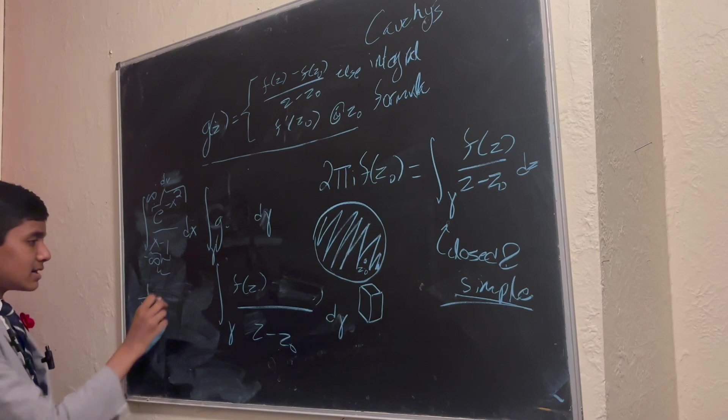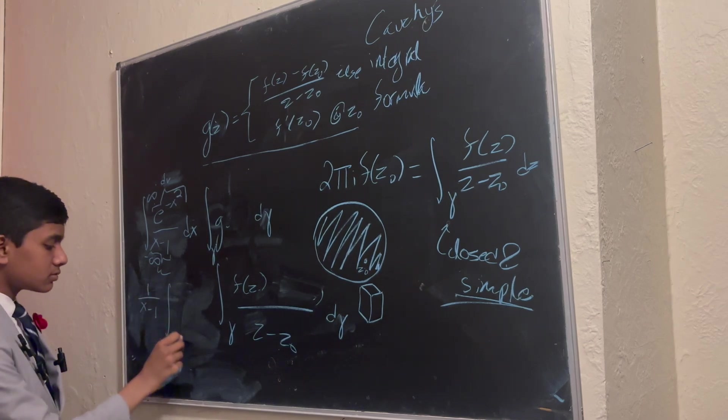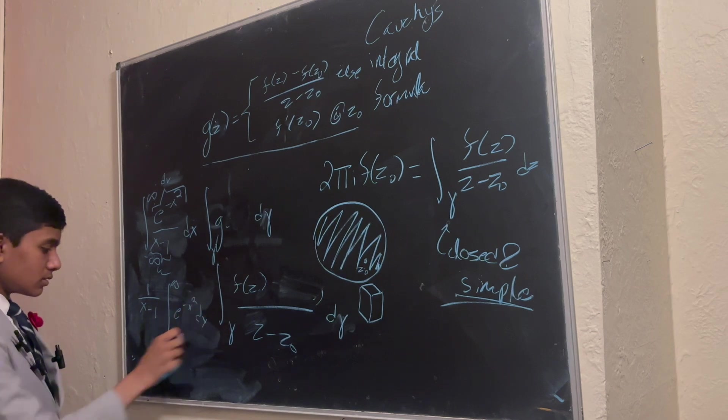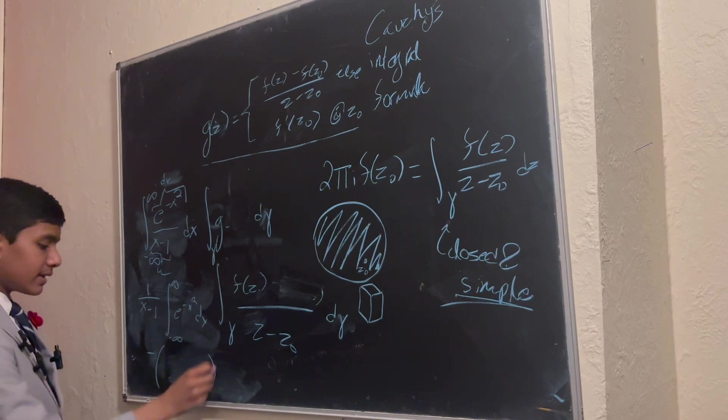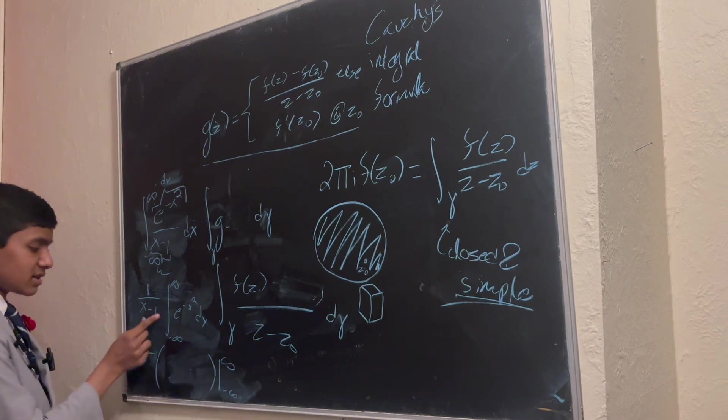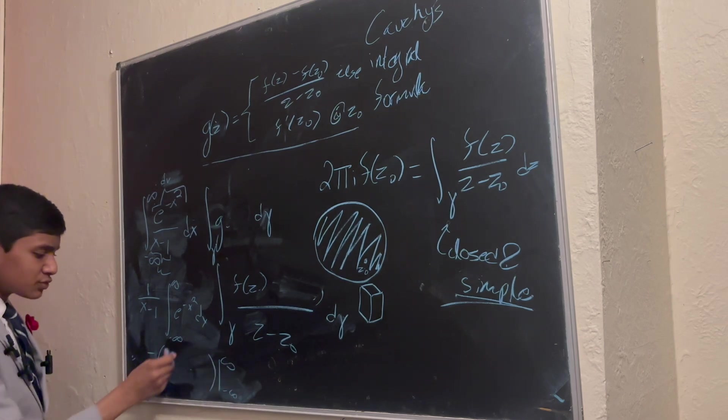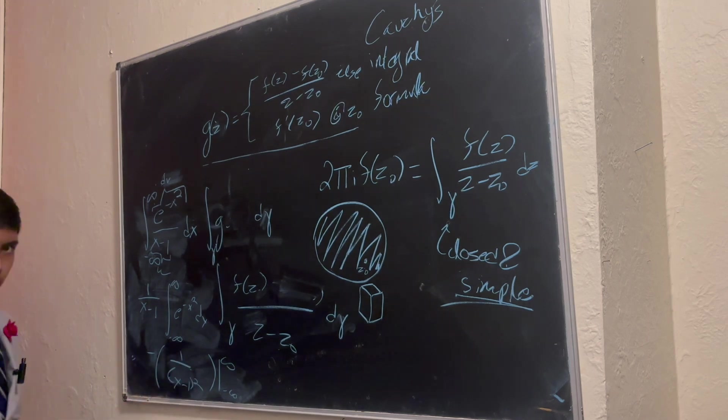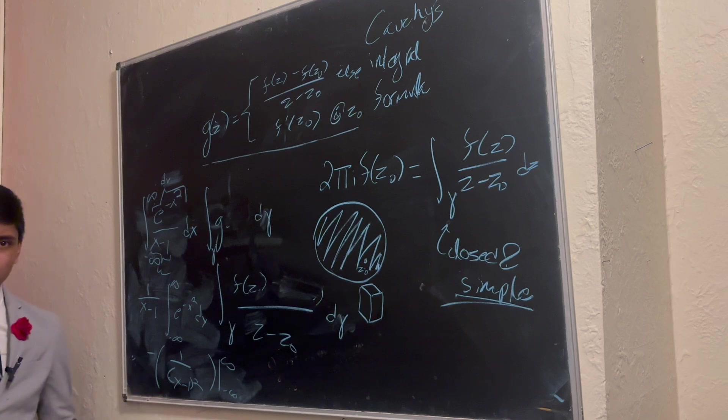So, you get this times that integral minus that integral. But here's the problem. This doesn't just go away. It becomes 1 over x minus 1 squared. What do you do about that? That's just going to get worse and worse.